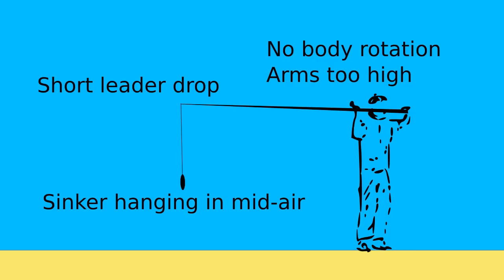To see why the EasyCast works so well, let's compare it with the old overhead method that begins with the rod tip held high and the sinker hanging on a short drop. The arms do all the work and the body does nothing. It's a dreadful way, but most fishermen still use it.